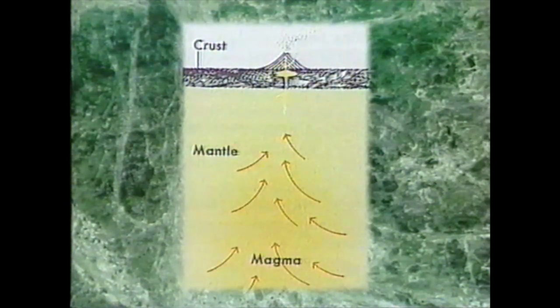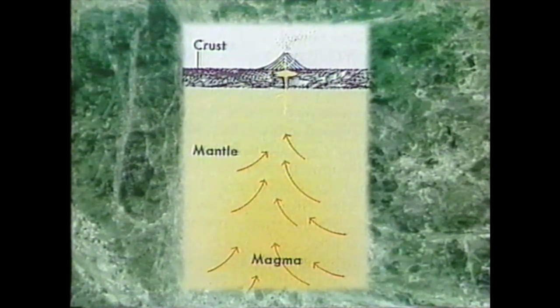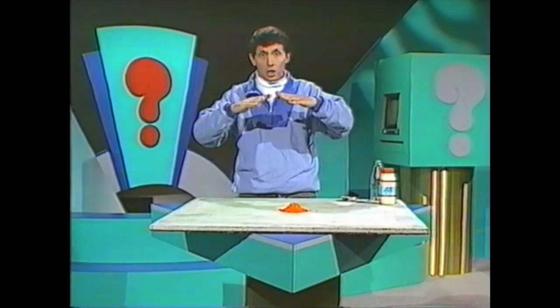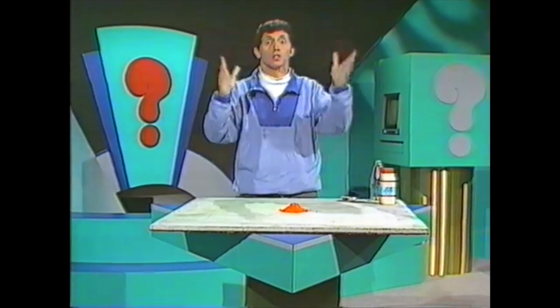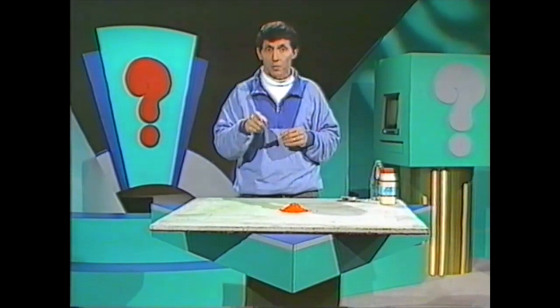If the magma finds a weakness in the earth's mantle and crust, it may push upwards and emerge at the surface, causing a volcano to arise. And that's of course what happened at Tarawera.